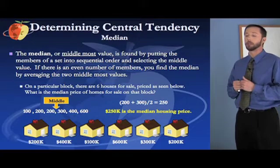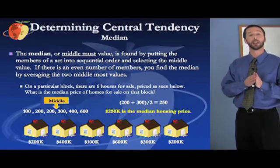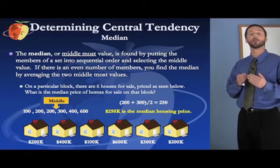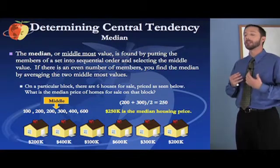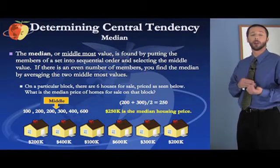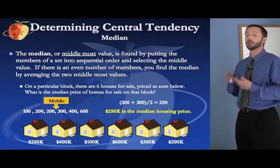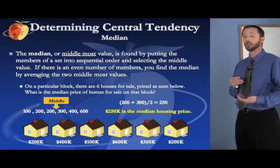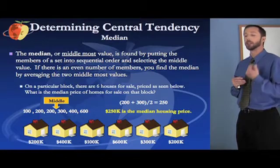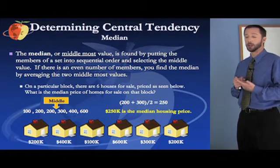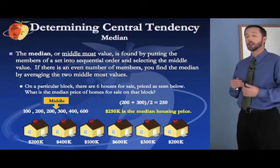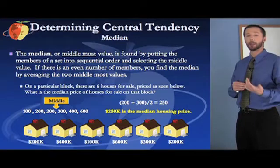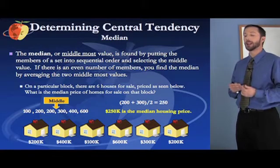In the case of the houses, there are six houses, so there's not going to be a single one in the middle because you have an even number of members. What you do in this case is average the two middlemost values. The first thing you need to do when finding the median is put the members of the data set in order — smallest to largest or largest to smallest. Here we go smallest to largest: $100,000, $200,000, $200,000, $300,000, $400,000, and $600,000. The middlemost value falls between $200,000 and $300,000, so we average them: $200,000 plus $300,000 is $500,000, divided by two gives $250,000. So $250,000 is the median housing price in this neighborhood.